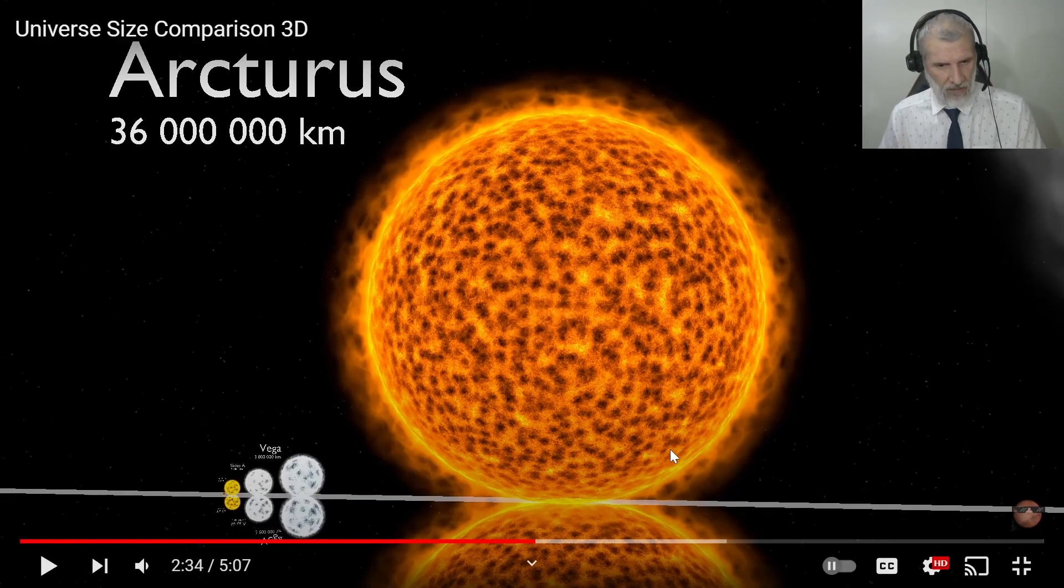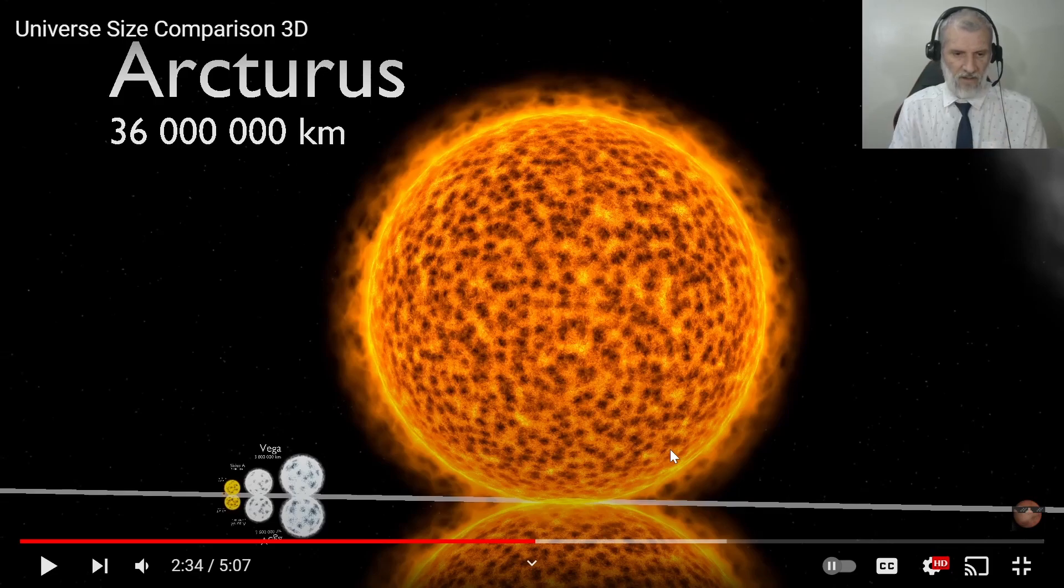All right, so now we're getting into some pretty decent sized stuff. So what's that, 36 million kilometers across? So all of this stuff here could just be sucked up by that one sun.